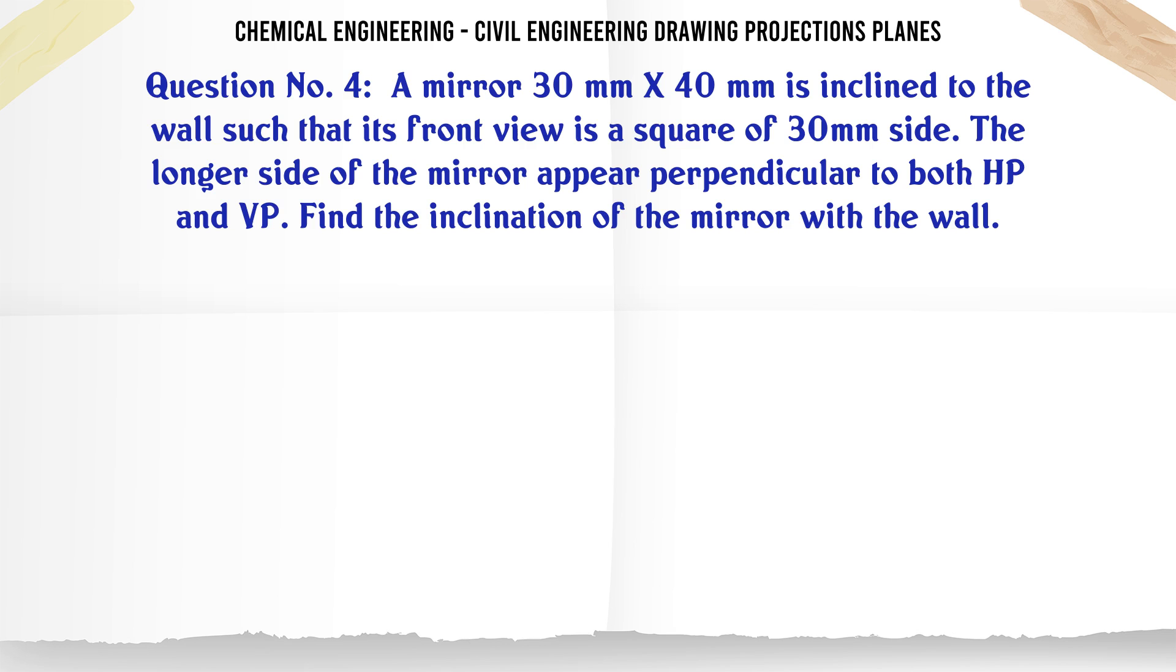A mirror 30 mm by 40 mm is inclined to the wall such that its front view is a square of 30 mm. The longer side of the mirror appears perpendicular to both HP and VP. Find the inclination of the mirror with the wall. Options: A. 48.76°, B. 36.78°, C. 51.76°, D. 41.41°. The correct answer is 41.41°.